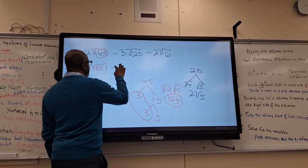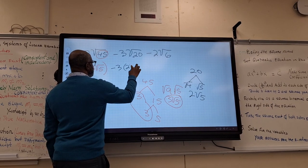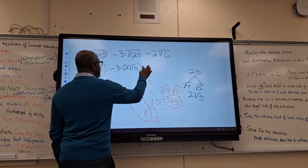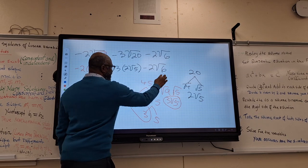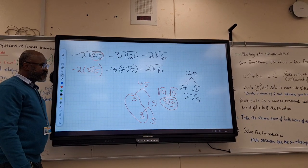So I will have minus 3 times 2 root 5, minus 2 root 6. So far, so good? All right.